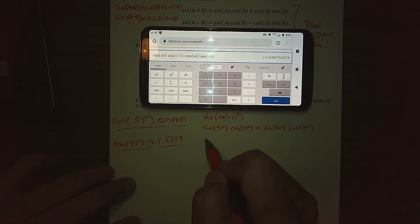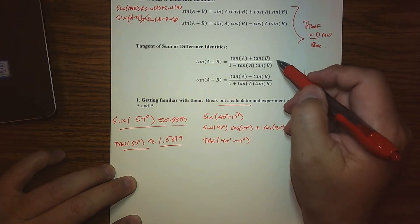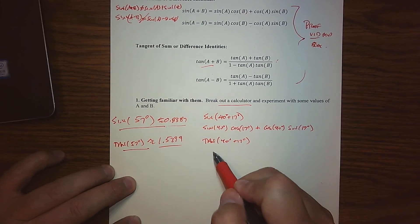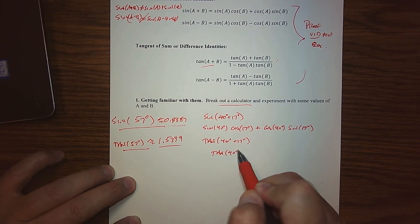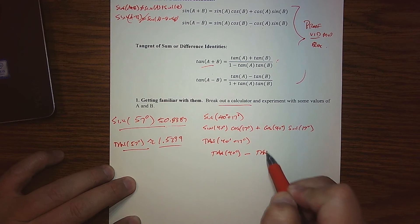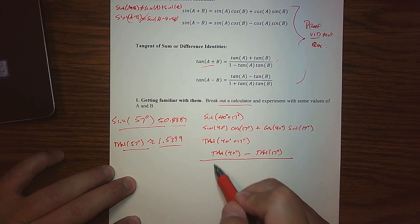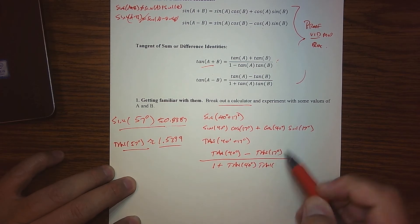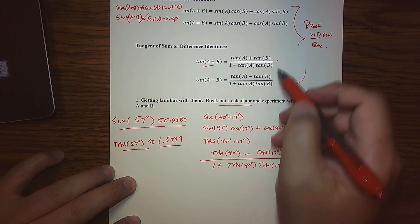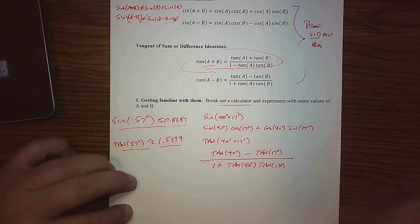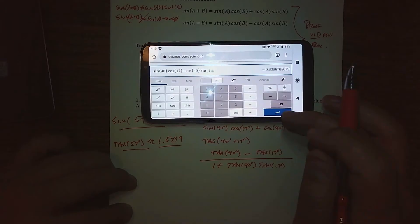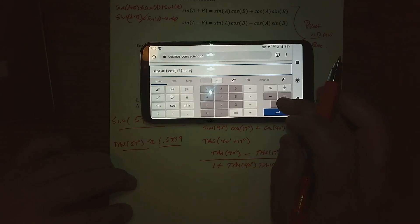Same thing with the tangent. What's the tangent of 40 degrees plus 17? Well, according to our formula, the tangent of a sum is we take the tangent of the first angle, subtract the tangent of the second angle, and then divide it by one plus the tangent of the first and the tangent of the second. So that's what that identity, the addition identity is telling us.